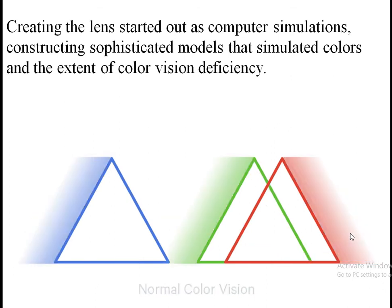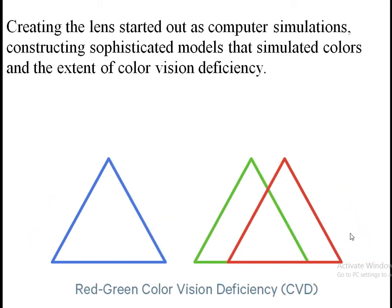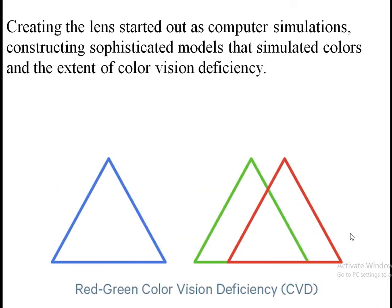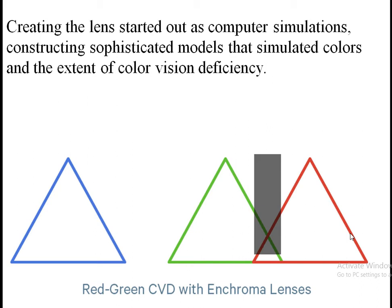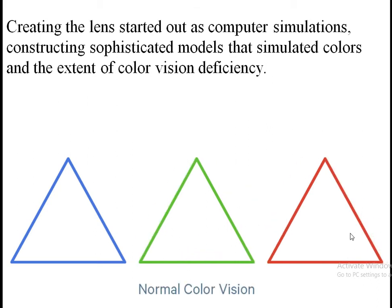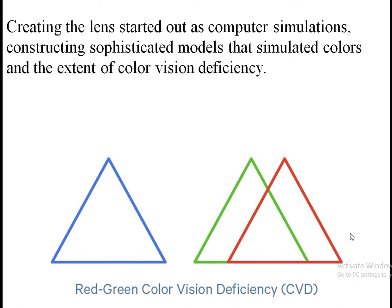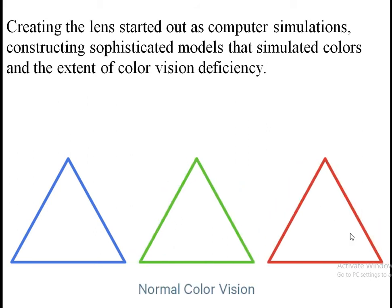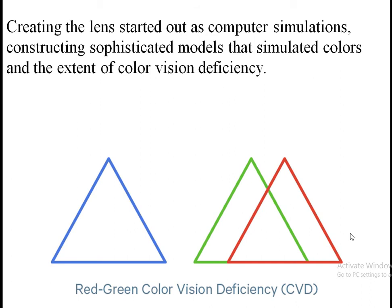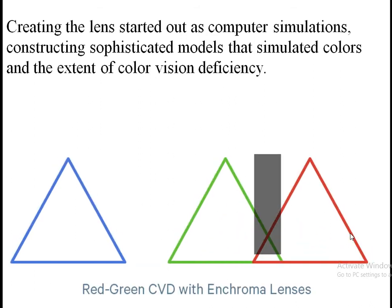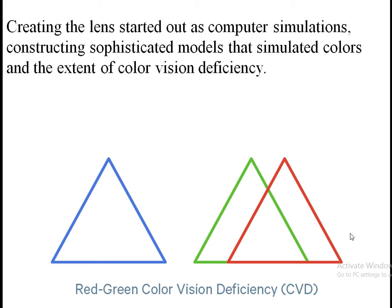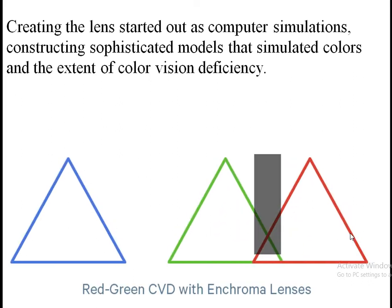This shows the normal process: with the combination of different colors you can have white color. Now coming to the abnormalities — also called color blindness. The most important thing is that color blindness does not mean the person cannot perceive any type of color. Actually, when we use this word we mean that some colors are not perceived correctly while others are perceived normally.